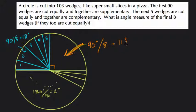So it's 11 and 2 eighths or 11 and 1 fourth or 11.25 degrees. So each of these wedges are 11.25 degrees.